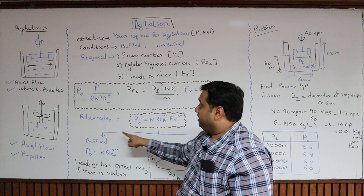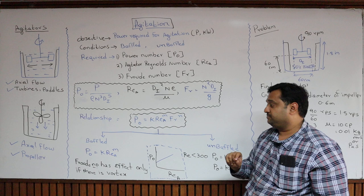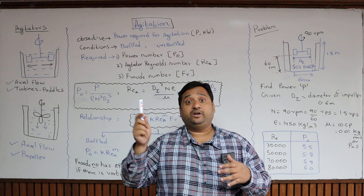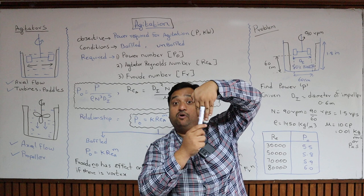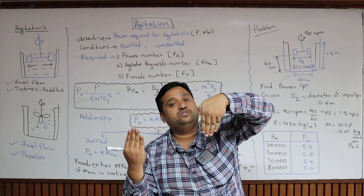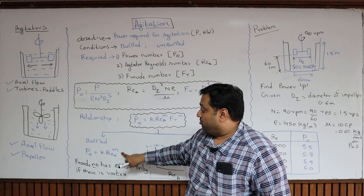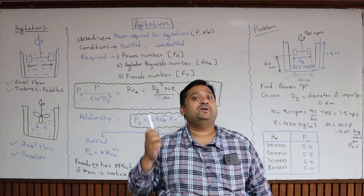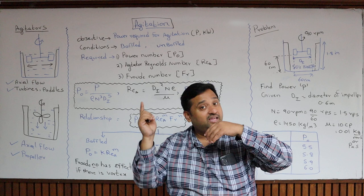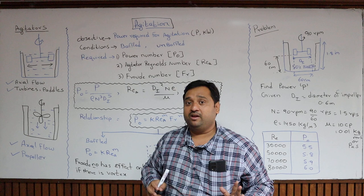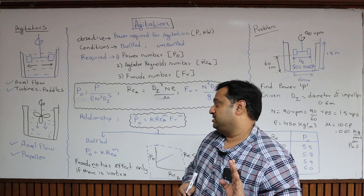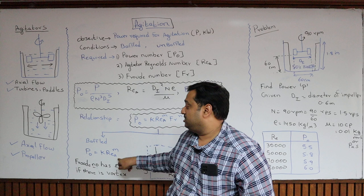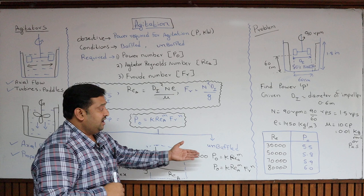There are two cases. For a baffled tank, vortex formation does not occur because the fluid hits the baffles and returns to the impeller. Since there is no vortex formation, the Froude number is not needed — it is only considered when vortex formation takes place. For the baffled tank case, if you know the constants k and m along with the agitator Reynolds number, you can find the power number and then calculate the power.